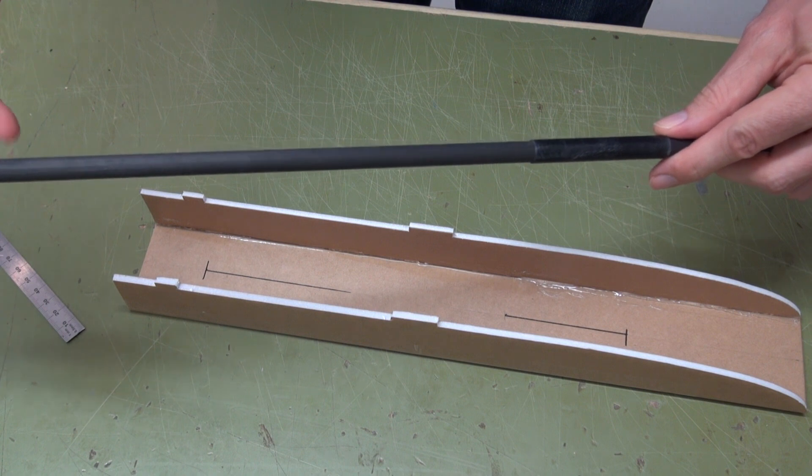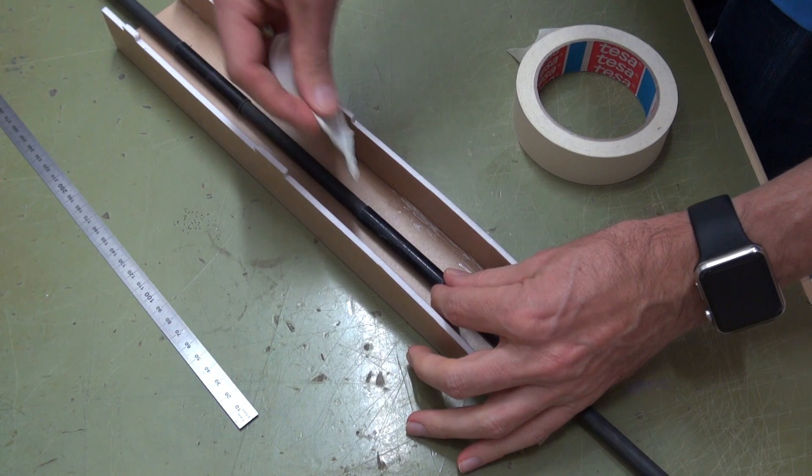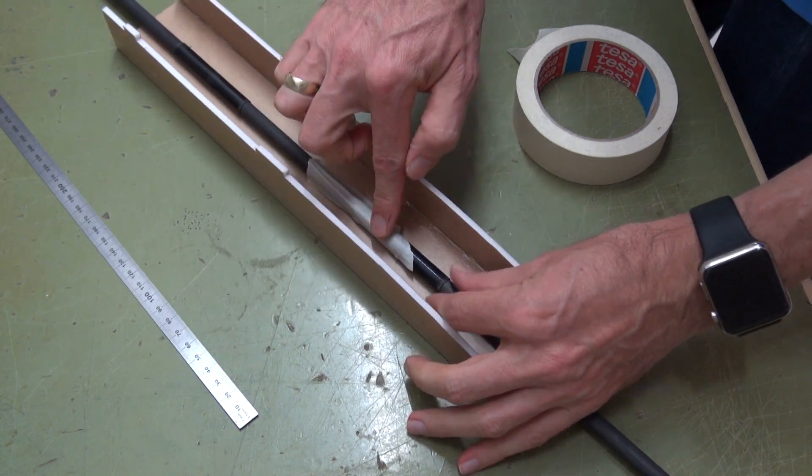Slide both fiberglass tubes over the carbon fiber tube. Correctly position the fiberglass tubes and then secure them with tape.